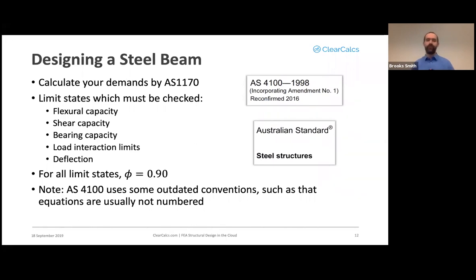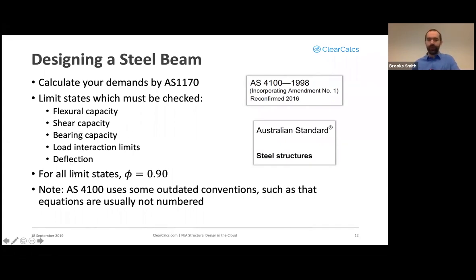The steel beam design process: first calculate demands using AS1170, then check limit states for flexure, shear, and bearing, as well as load interactions (flexural-shear and flexural-bearing), then check deflection. In AS4100, the resistance factor φ is 0.9 for everything related to the beam — it's simply a flat 0.9 repeated throughout the table.